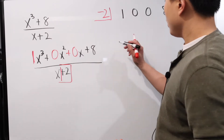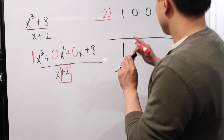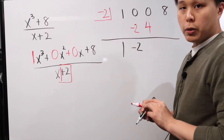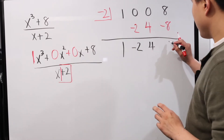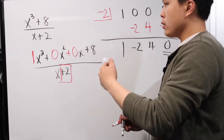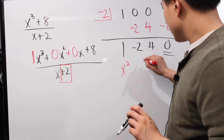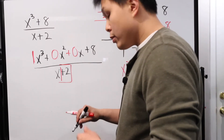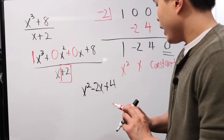Now we start. We bring the one straight down. Then we multiply: one times negative two is negative two, so we write negative two here. Zero plus negative two is just negative two. Then negative two times negative two is four, so we have a four here. Zero plus four is just four. Then negative two times four is negative eight, so negative eight. And adding straight down gives zero — great, no remainder. Originally we were at a cubic function, so dividing by a monomial means it goes one exponent down to a quadratic. So this must be x squared, this must be x, and this is the constant. The end result is x squared minus two x plus four.